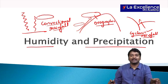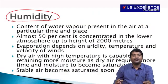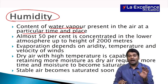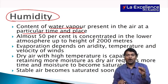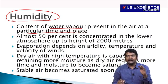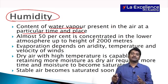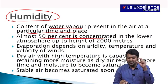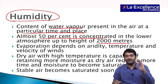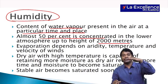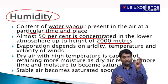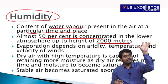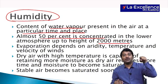Now let us look at humidity — the amount of water vapor present in the air at a particular time and place. Moisture content is more when you have an ocean or river nearby; if moisture content is less, it is dry like deserts. Almost 50% of moisture is usually present at a height of 2,000 meters. This is why mountains have less moisture content, and moisture absorbs incoming solar rays and outgoing terrestrial rays — we call mountains 'windows.'